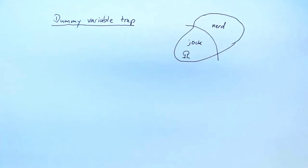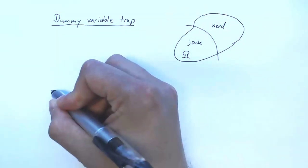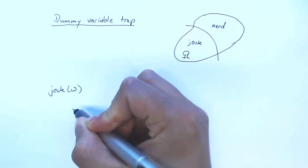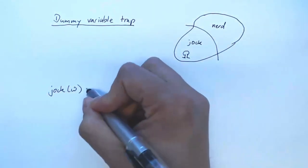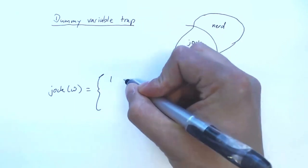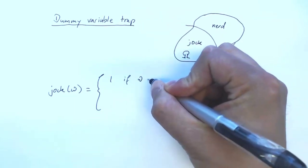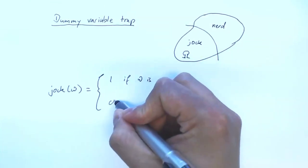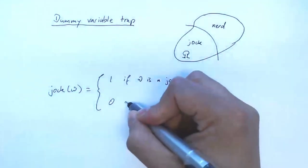We define random variables to describe this population. We define one random variable jock which for every student ω in the population takes the value 1 if ω is a jock and is 0 otherwise.